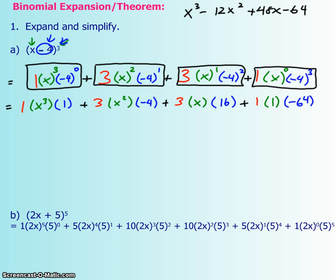Now your last step is just to put everything together. 1 times 1 times x cubed is x cubed. Positive 3 times negative 4 is going to give you negative 12 and then the x squared. Then we have positive 3 times 16, so positive 48x. And 1 times 1 times negative 64 is negative 64. Notice that it is exactly as I got before. This is much easier because I only did it in 3 steps instead of 5.